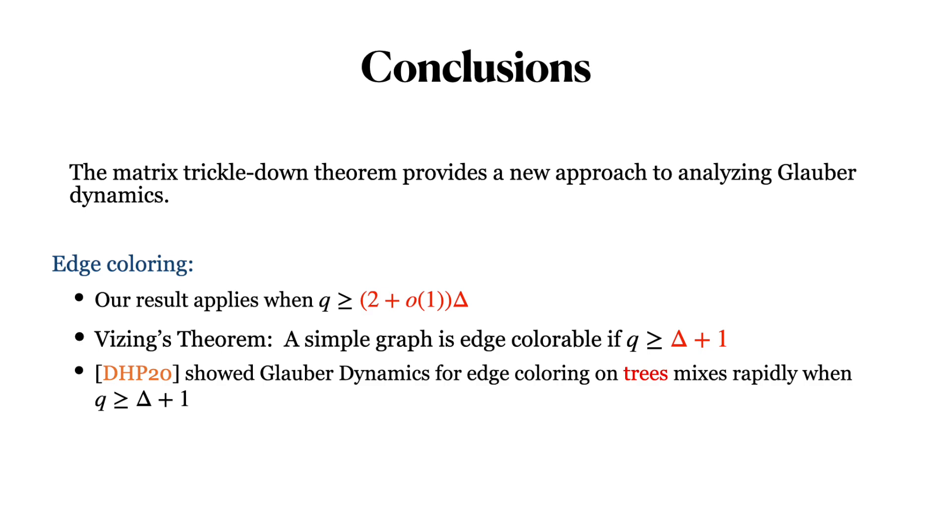The open problem is determining the computational threshold in terms of the degree of the original graph. When q is smaller than 2Δ, the single-site Glauber dynamics become reducible, which indicates the need for innovative methods to narrow the gap.